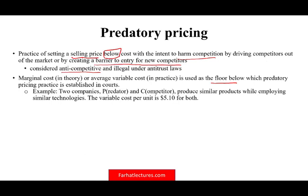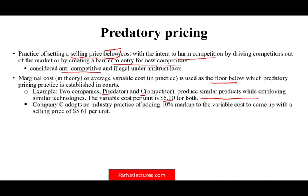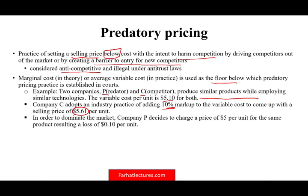Let's look at an example. Assume we have two companies, P and C — a predator company and a competitor company. They produce a similar product using similar technologies. The variable cost is about $5.10. Company C follows the industry practice of adding 10%, ending up selling the product at $5.61. In order to dominate the market, company P sells it at $5.00, meaning they are losing $0.10 per unit.